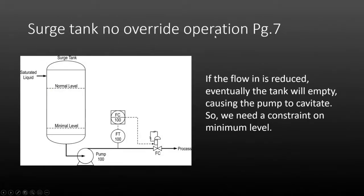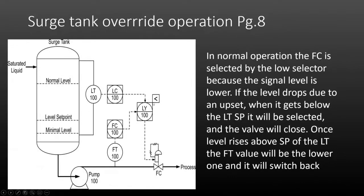Here we have a surge tank with no override operation. If the flow coming into the tank is reduced, eventually the tank is going to empty, causing the pump to cavitate — and that would be a problem. We need some type of constraint to ensure we maintain minimum level. To implement a selective strategy, we take a low selector, put it in the flow loop, and connect it with the level loop.